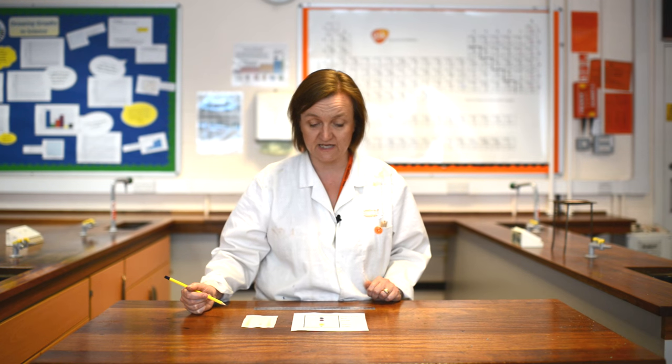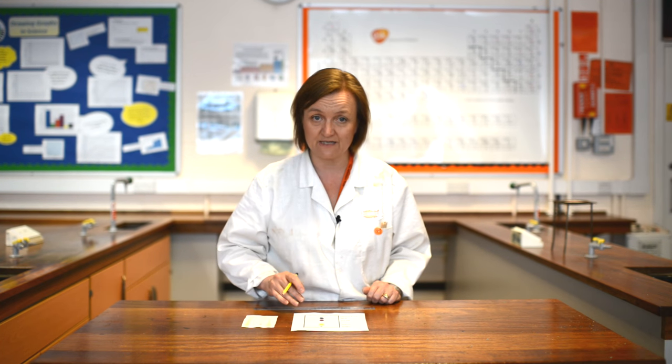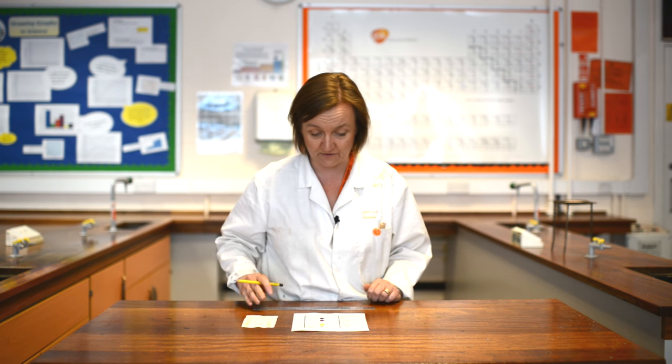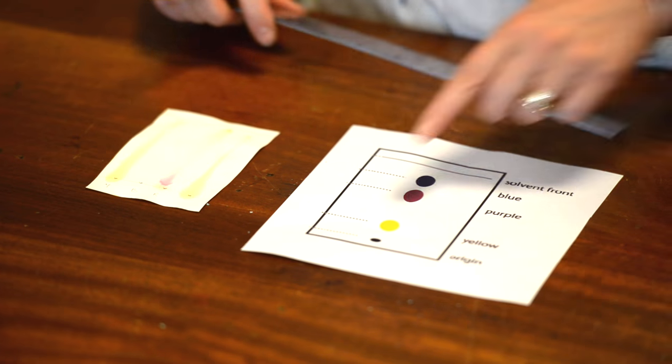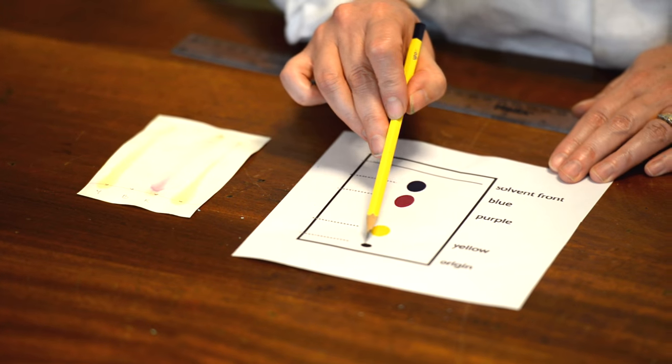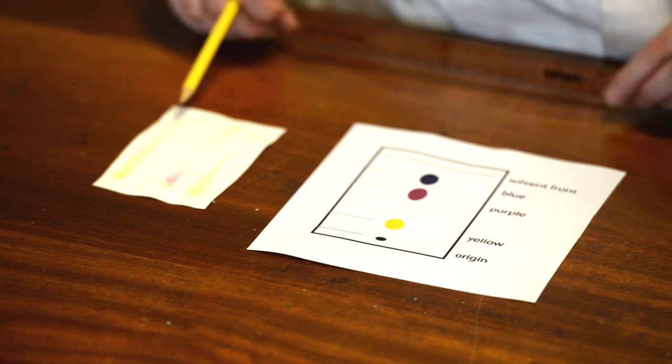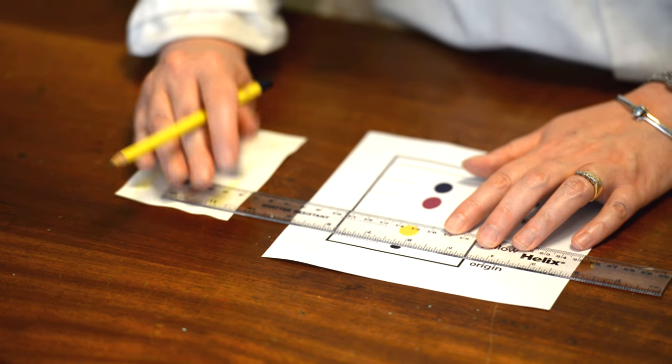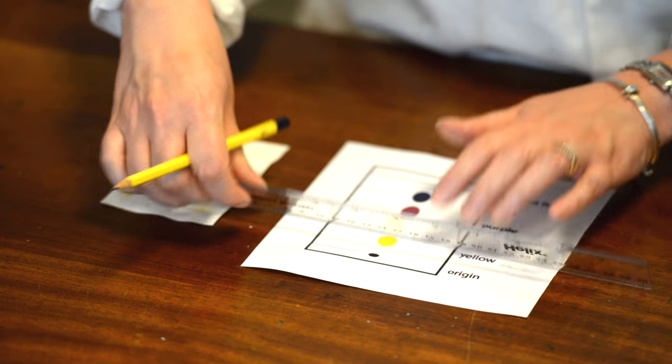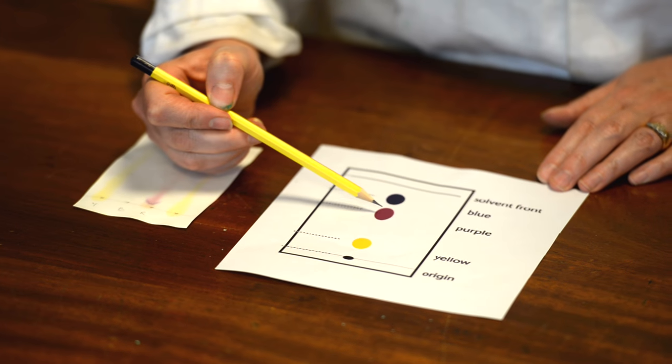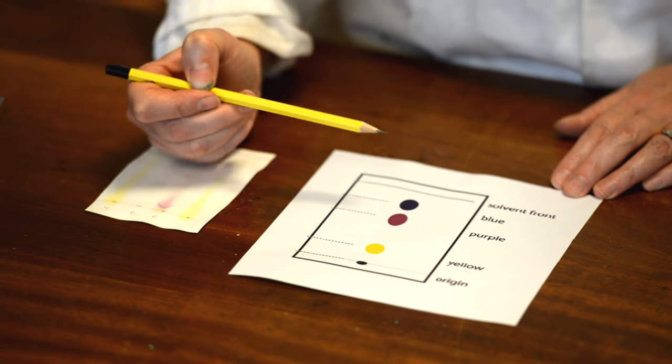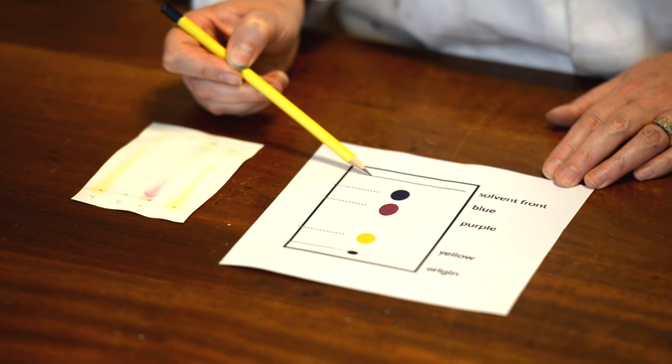You need to be able to calculate an RF value, which is a measurement of how far the individual colors have traveled. That's difficult to do on the chromatogram that I've made, so I'm just going to demonstrate that using this picture that I've got here. On this one we can see we've got our origin, the baseline which I drew on with a pencil. You can see we've got a series of color dots which have separated, and this is as far as the solvent has traveled.